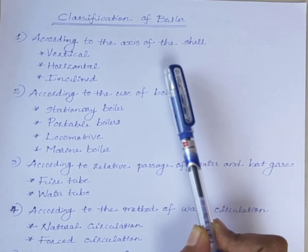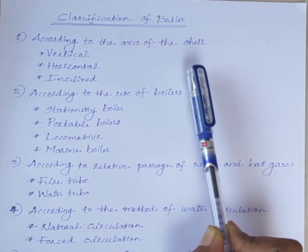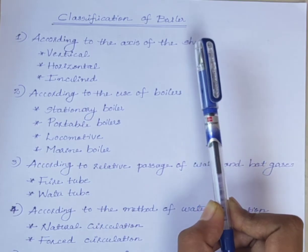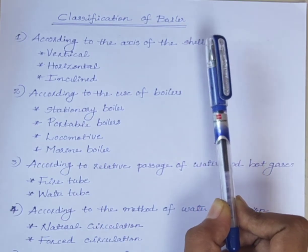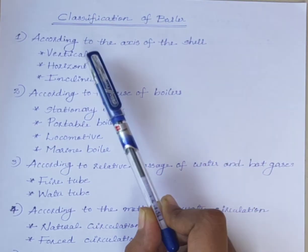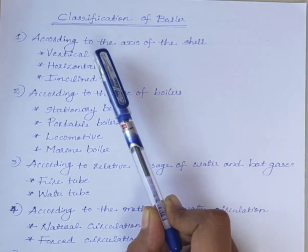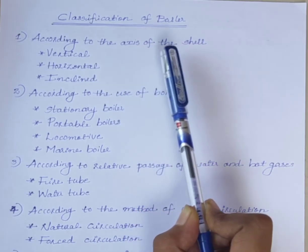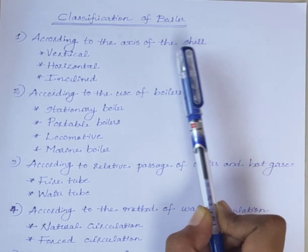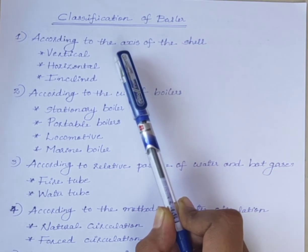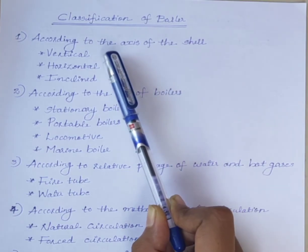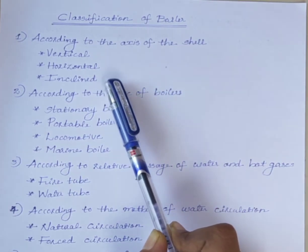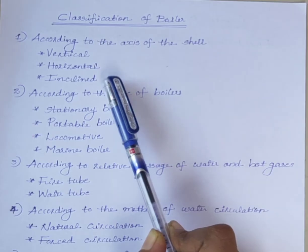Hello students, today we will discuss classification of boilers, or types of boilers. The first classification is according to the axis of the boiler shell. Boilers are classified into vertical boiler, horizontal boiler, and inclined boiler.